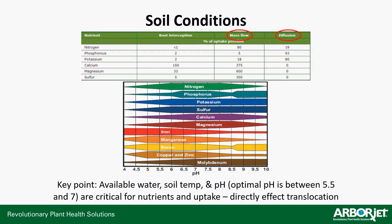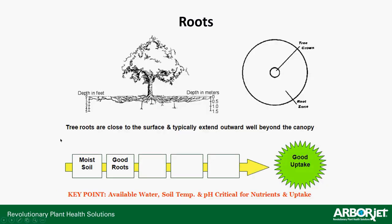Conversely, on a day where the tree hasn't seen water for two to three weeks and it's starting to go into drought stress, the canopy actually shuts down to not lose any more water. That means it's capping off the exit, so nothing can come in because nothing can get out. It's got to work in this cycle.